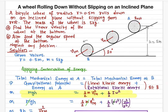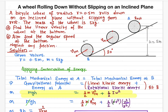The mass of the wheel is 5 kilogram. We need to find out when the bicycle wheel comes to the bottom of this inclined plane, what is the linear velocity (center of mass velocity) when it reaches the bottom, and what is the angular speed at the bottom. The height of the inclined plane is 5 meter and this angle is 20 degrees.